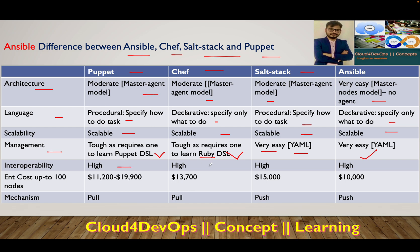Interoperability is very high in all the tools, supporting Windows and Linux as managed nodes. However, with Ansible, the controller engine cannot be installed on Windows — it has to be on a Linux-based system, and from there it manages the rest of the managed nodes.